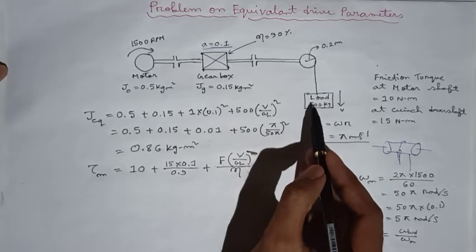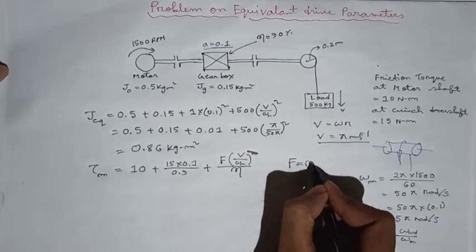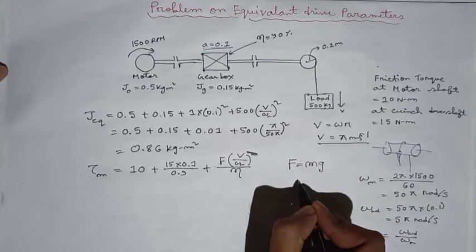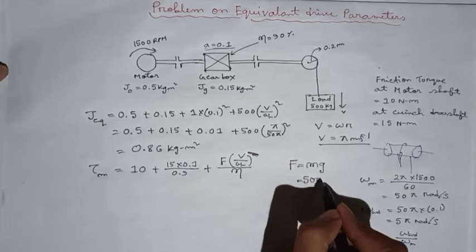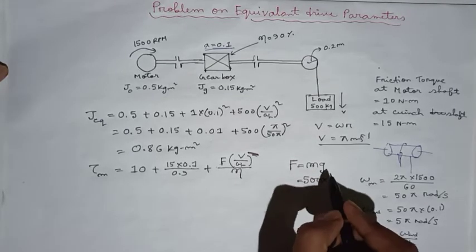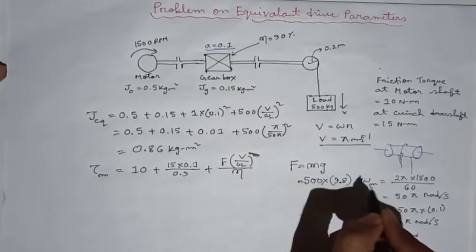Now for force F on this load, we will get that F is equal to m times g. That is, m is the mass of this load, that is 500 kg times g, that is 9.8 meter per second square.